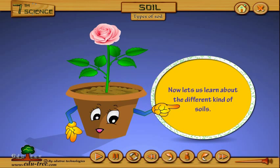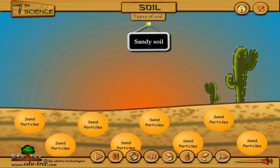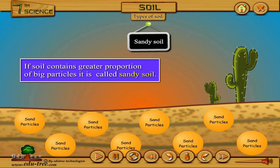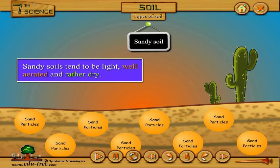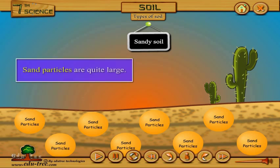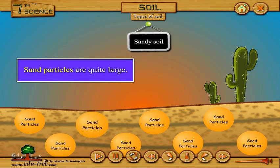Now let us learn about the different kinds of soils. Sandy Soil: if soil contains a greater proportion of big particles, it is called sandy soil. Sandy soils tend to be light, well aerated, and rather dry. Sandy soil sand particles are quite large.